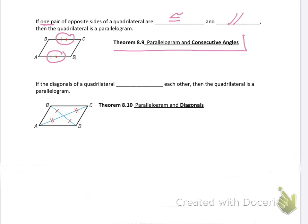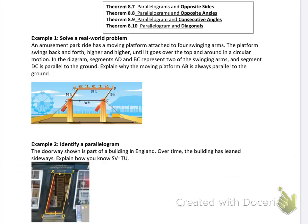Theorem 8.10: If the diagonals of a quadrilateral bisect each other, then the quadrilateral is a parallelogram. They have to bisect each other to make that true. You need information about both sets. Let's go on to the next page of notes.